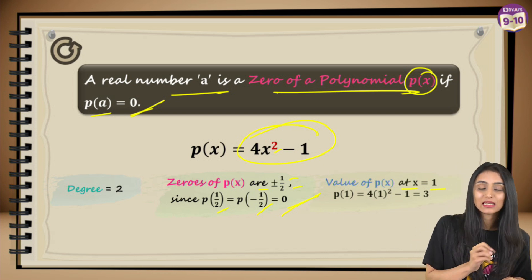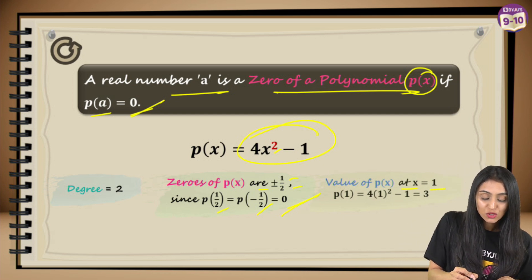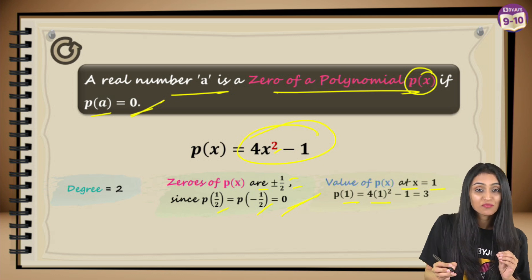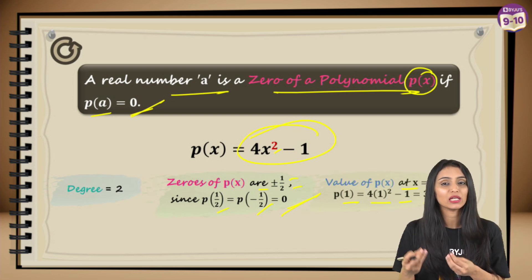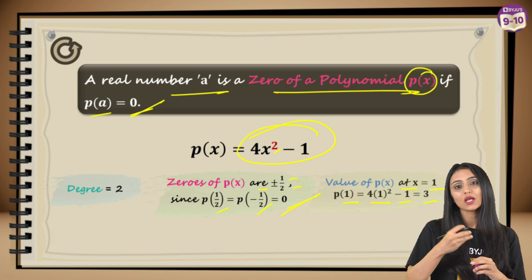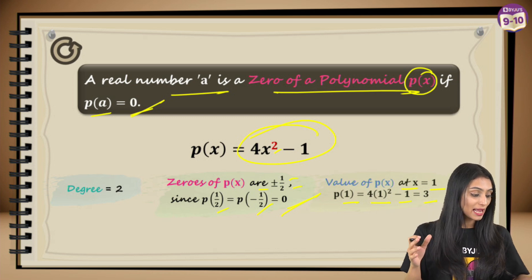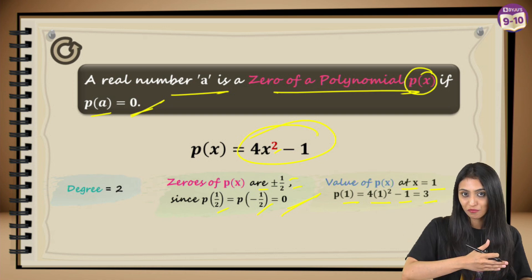Let's check the value of the polynomial at x equals to 1. How do we check the value of a polynomial at any number? You just have to replace the variable with that number. That's going to be 4 times 1² minus 1, which gives you 3. So 3 is the value of the polynomial when x equals 1. That was just a brief introduction about what zeros are, what is degree, and how to find out the value of the polynomial.